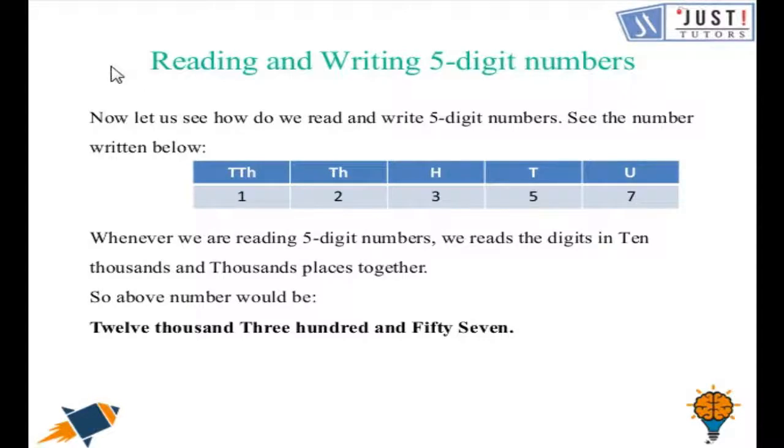Now let us learn how to read and write 5-digit numbers. So now let us see how do we read a 5-digit number here in the place value chart. So whenever we are reading a 5-digit number we read the digits of 10,000 column and the thousands column together. So 12 is read together. So you can read the above number as 12,357.